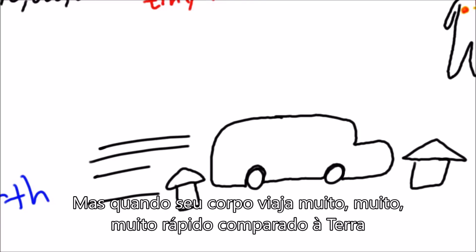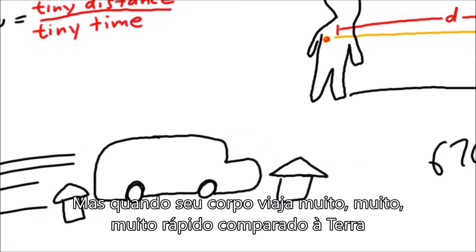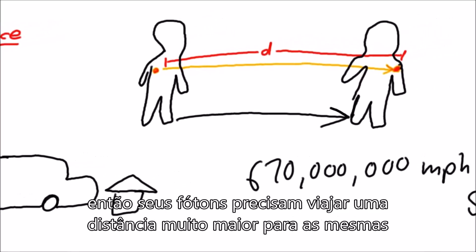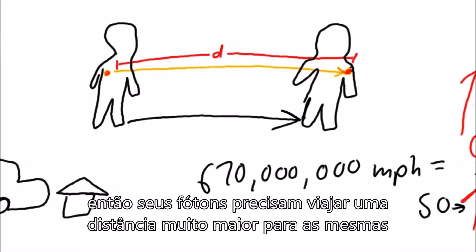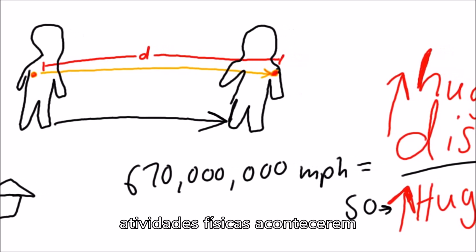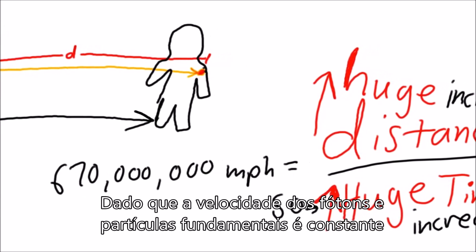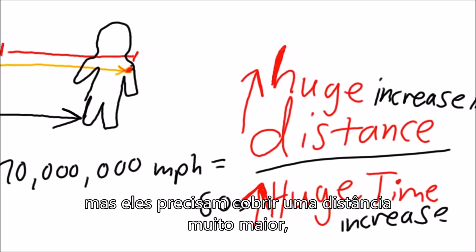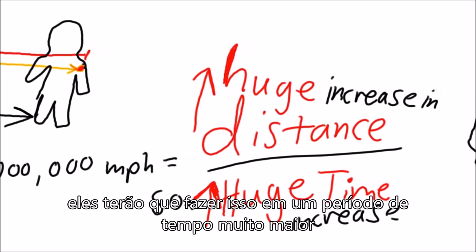But when your body moves really, really fast compared to earth — much closer to the speed of light — your photons have to travel a much larger distance for those same bodily activities to occur. Since the speed of the photons and fundamental particles is constant, but they need to cover a much larger distance, they will have to do it in a much longer time.